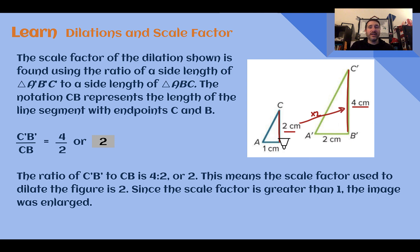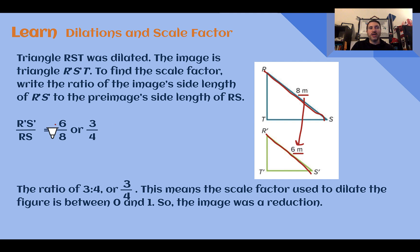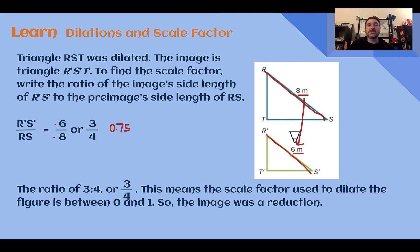We can also double-check by verifying the scale factor is the same throughout — 1 to 2 also multiplied by 2, confirming proportional dilation. In a second example, RS was 8 and R'S' is now 6. Dividing the image by the pre-image: 6 divided by 8 reduces to 3/4, or 0.75. Since the scale factor is between 0 and 1, this is a reduction — the image is a smaller triangle than the pre-image.